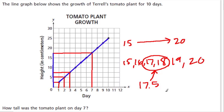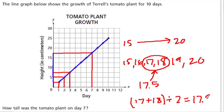17 and a half is right between 17 and 18, and that's it. If you didn't know that, what you could do is take 17, add it to 18, and divide that by 2 — so you average the two numbers — and you would get 17 and a half. Hope that helps.